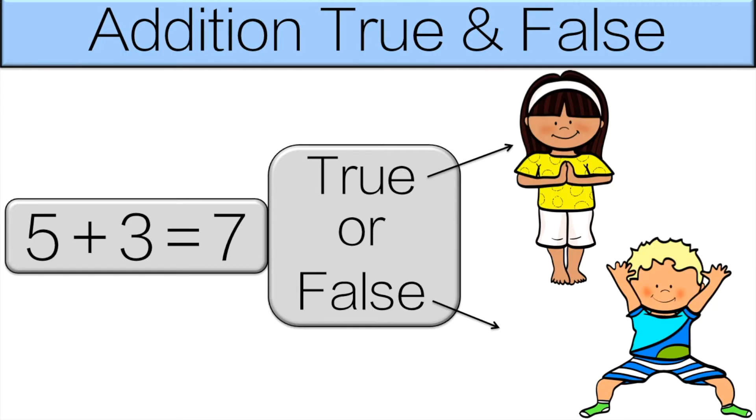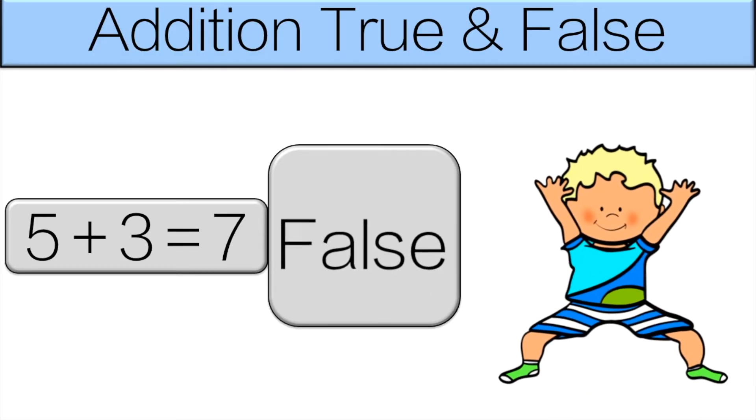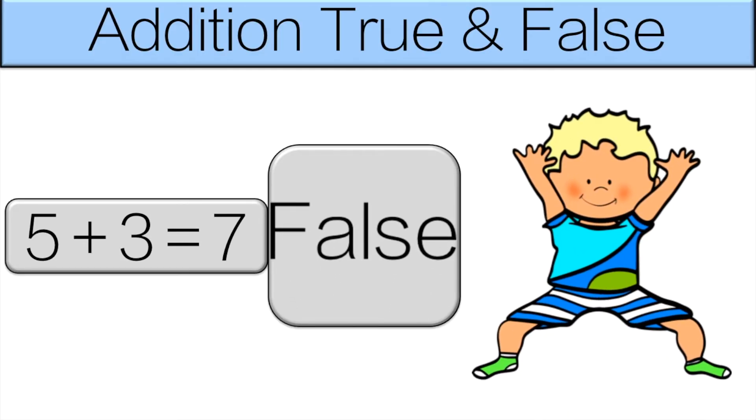This time you will read the equation and figure out is it true or false. It is false. 5 plus 3 is 8. So do the horse pose for 10 seconds.